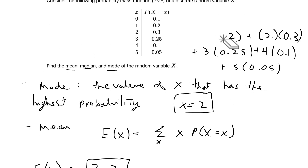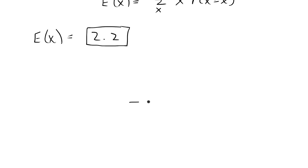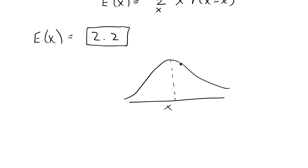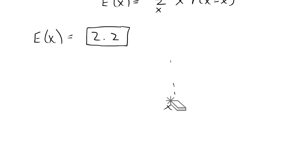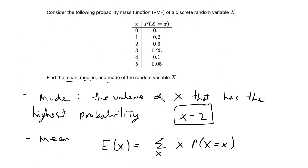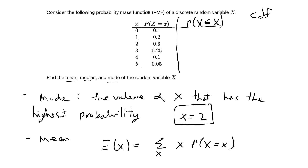Finally, we're going to calculate the median. Conceptually, the median is the value on the probability distribution where 50% of the distribution is above that value and 50% is below it. To find that median point, we're going to calculate the cumulative distribution function, or CDF. The CDF is equal to the probability that x is less than or equal to a given value. The PMF gives us the probability that x equals a certain value, and to find the cumulative probability we sum every value less than or equal to that value of x.